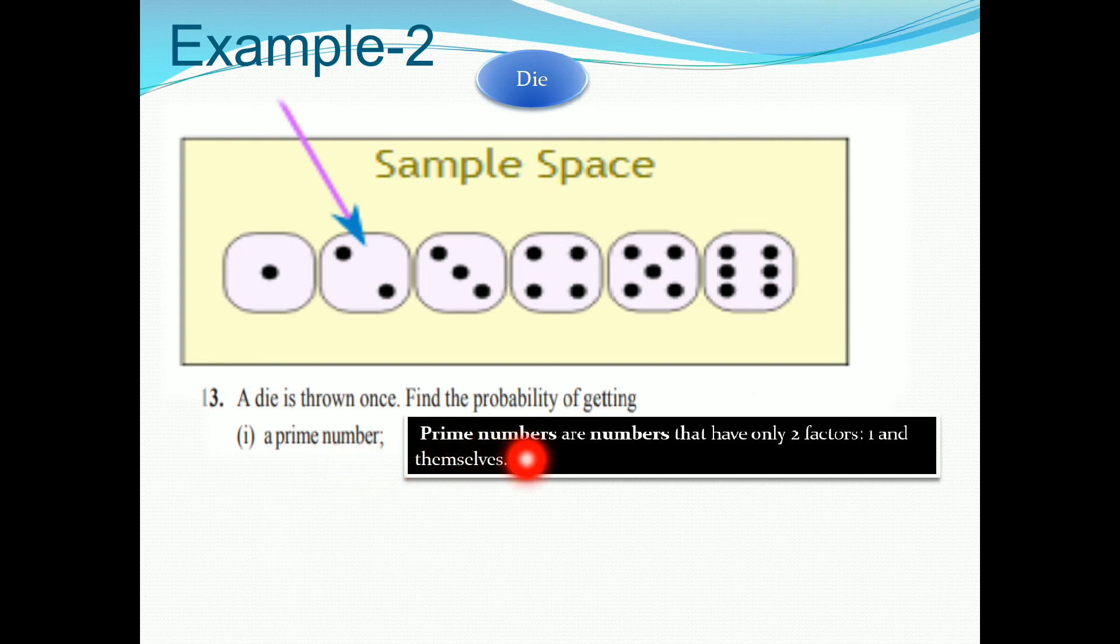Prime numbers are the numbers that have only 2 factors. A number which have only 2 factors, that numbers are called prime number. So in dice, we have prime number. That is 2, and 3, and 5. Because these 3 numbers are prime numbers. These 3 numbers are having only 2 factors.